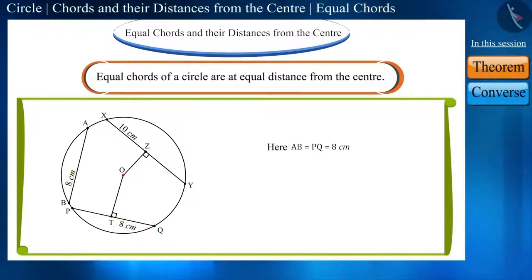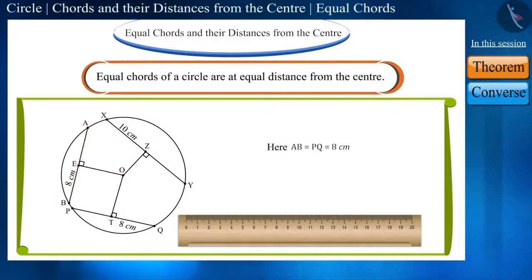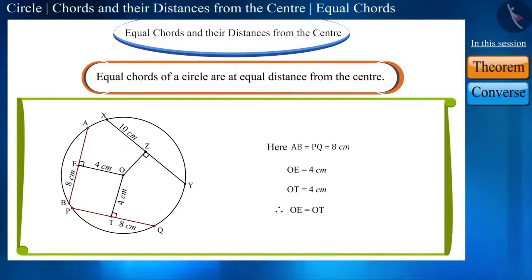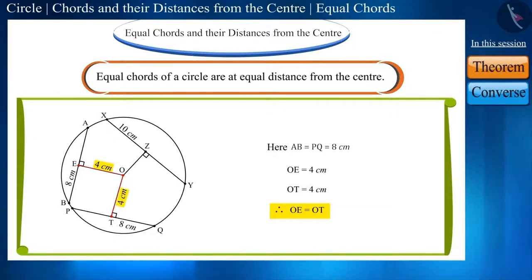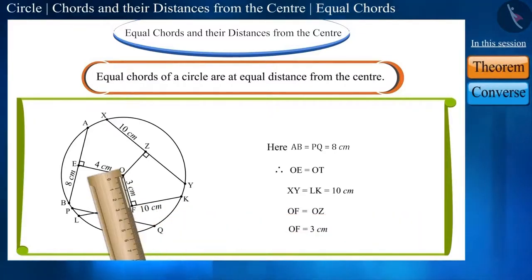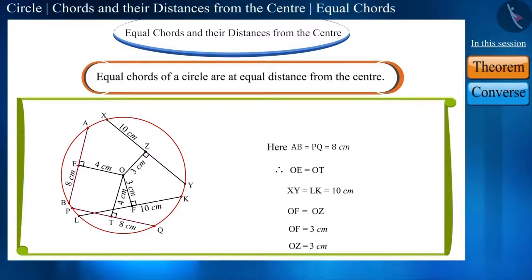Draw a perpendicular OE from the center O to chord AB. Find the length of OE with the help of a scale. You can see that the length of OT and OE is equal, and the length of these two chords PQ and AB is also equal. So their distance from the center is also equal — OT and OE are also equal. Similarly, draw a chord LK equal to chord XY and also draw a perpendicular OF on it from the center. Friends, will OF and OZ also be equal? Yes, you can see that OF and OZ are also equal. In this way, we verify that equal chords of a circle are at equal distance from the center.